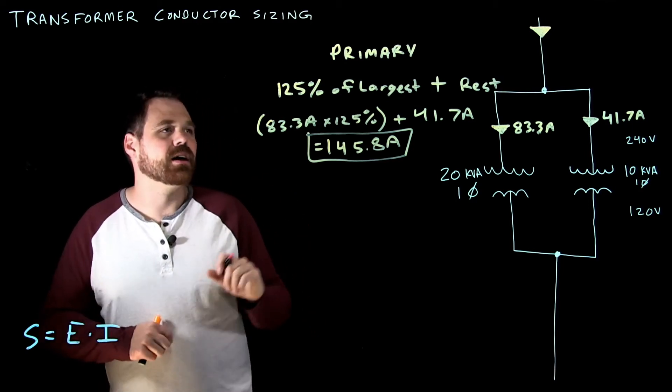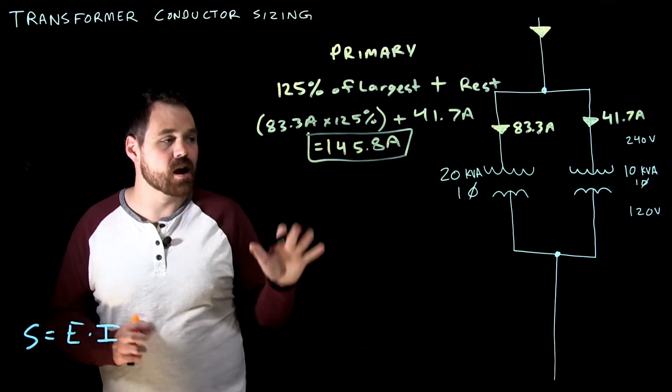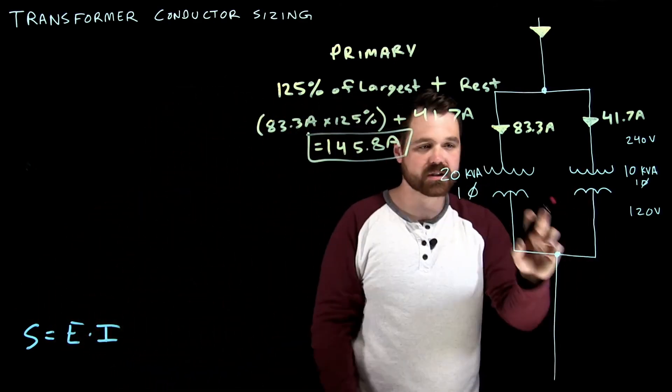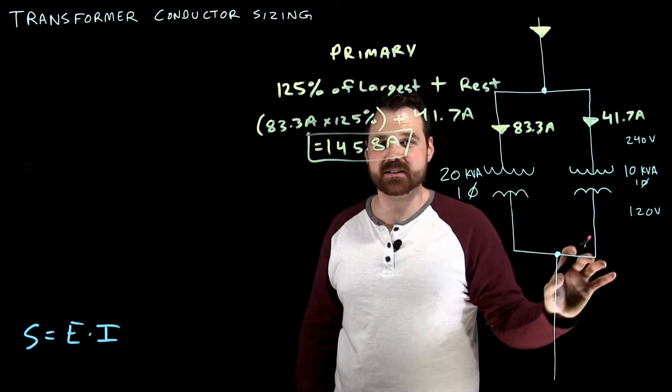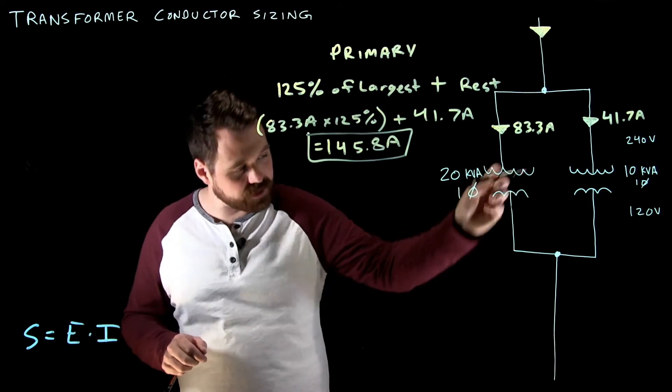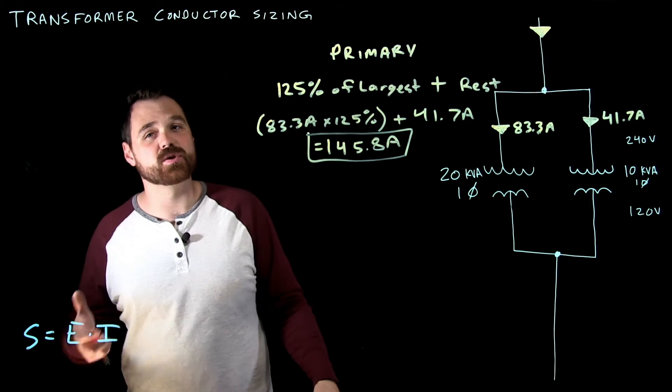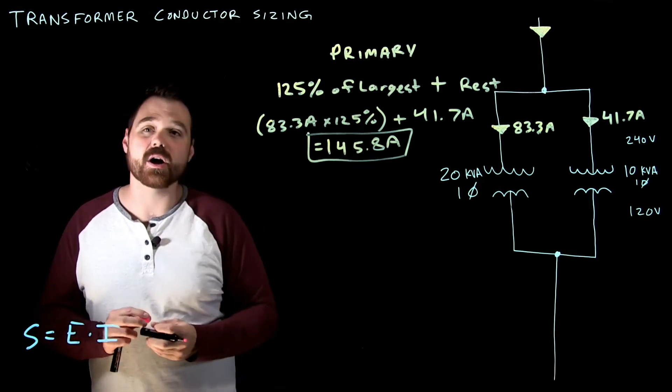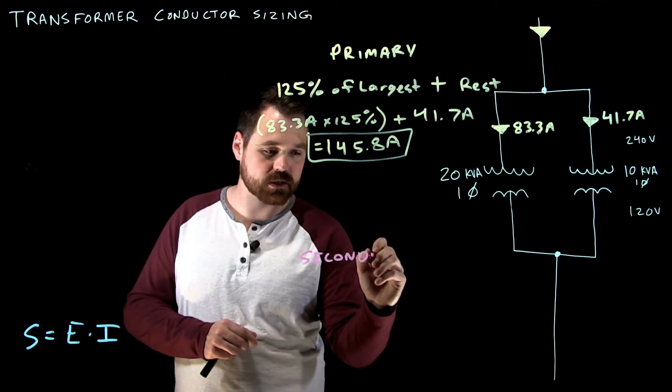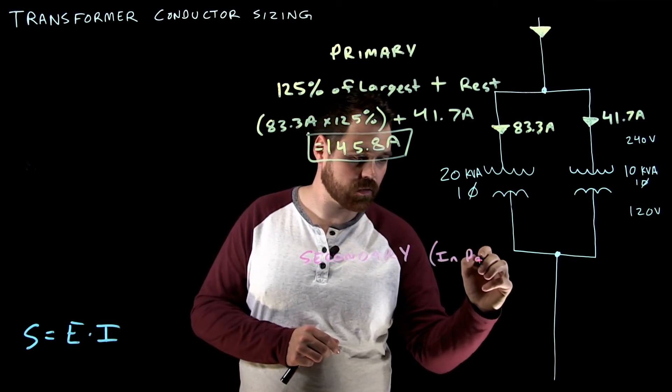All right. Now I want to talk about the secondary of the transformer. So that's the primary. The secondary is easy. The thing here we have to remember is this only matters if the secondaries are in parallel like this. So because these secondaries are connected together, we need to apply the rule. If they weren't, if they were not connected in parallel, and they just went out to feed separate loads, you would treat the secondaries as individual transformer conductors. But because they are parallel, so secondaries, secondaries, and I'm just going to put in parallel.